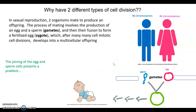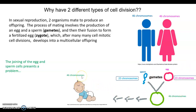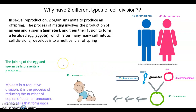What if there was a way for sperm-producing and egg-producing adults to produce sperm and eggs that only had 23 chromosomes — half the chromosome number? Then when the egg and sperm joined, the fertilized egg, or zygote, would have 46 chromosomes, and the next generation would have the same parental chromosome number. This process of going from 46 chromosomes to 23 chromosomes is meiosis — a reductive division that reduces the number of copies of each chromosome in the cells that form eggs and sperm.